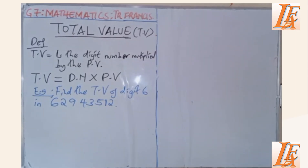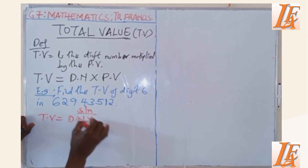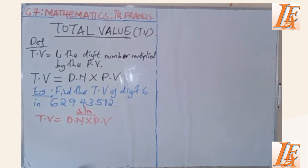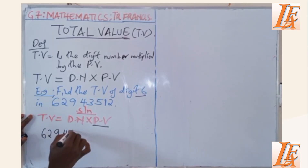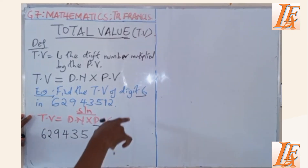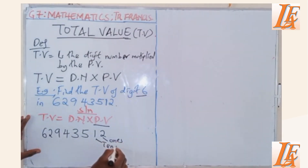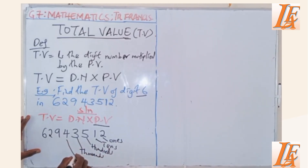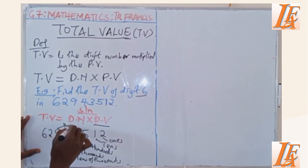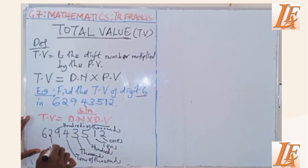Therefore, we must first start by finding the place value of that number. Solution: total value is equal to digit number times place value. The first thing we do is find the place value of digit 6. So we write the number 6,294,3512. Working through each digit: 2 is in the ones place, 1 is in the tens, 5 is in hundreds, 3 is in thousands, 4 is in tens of thousands, 9 is in the place value of hundred thousands, and 2 is in the place value of millions.